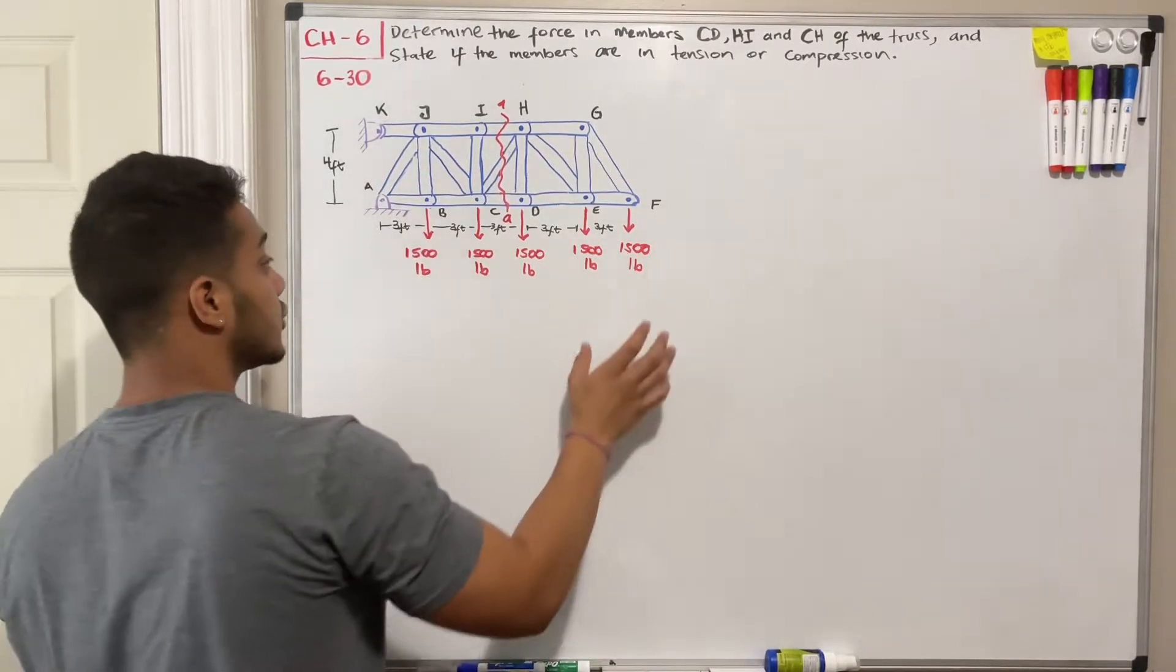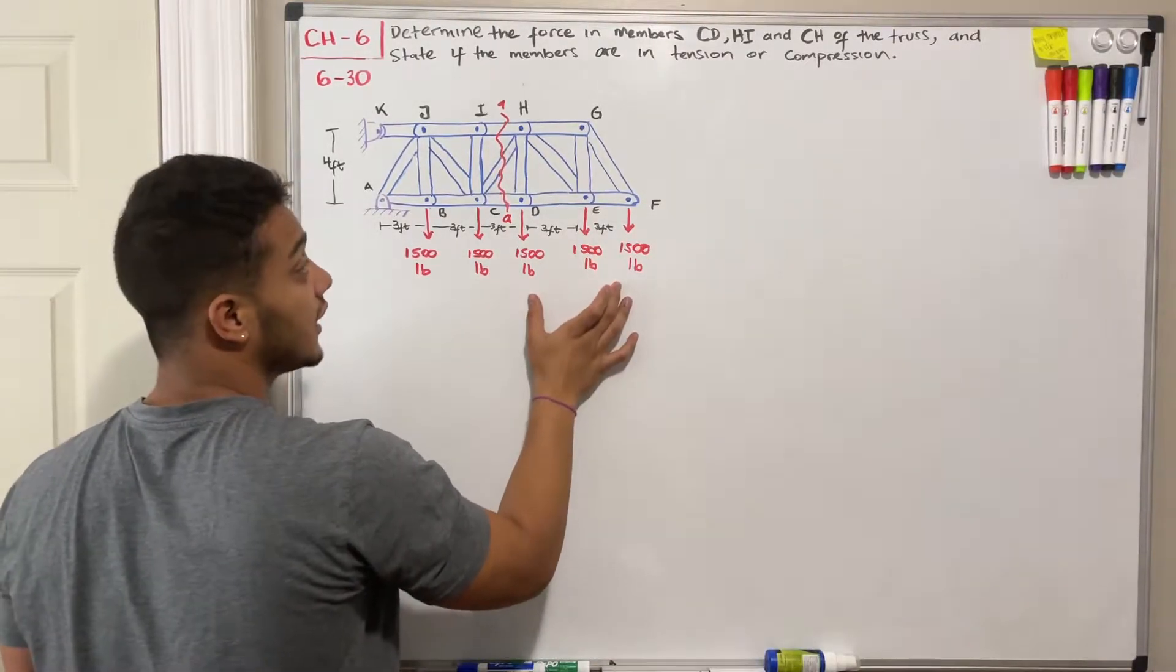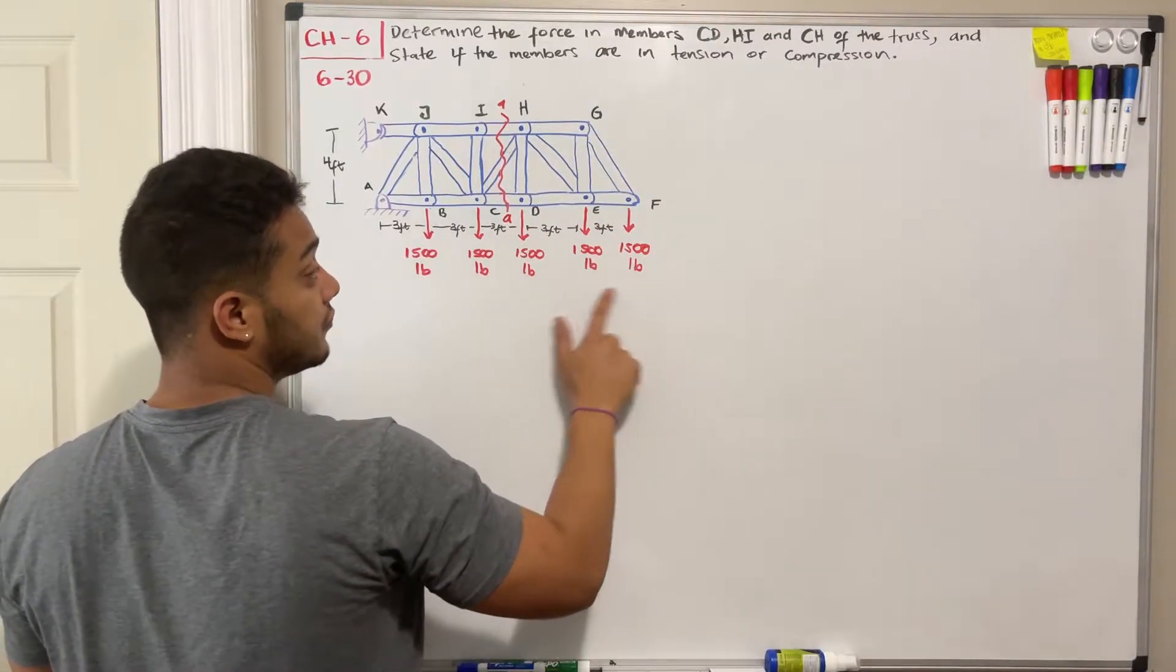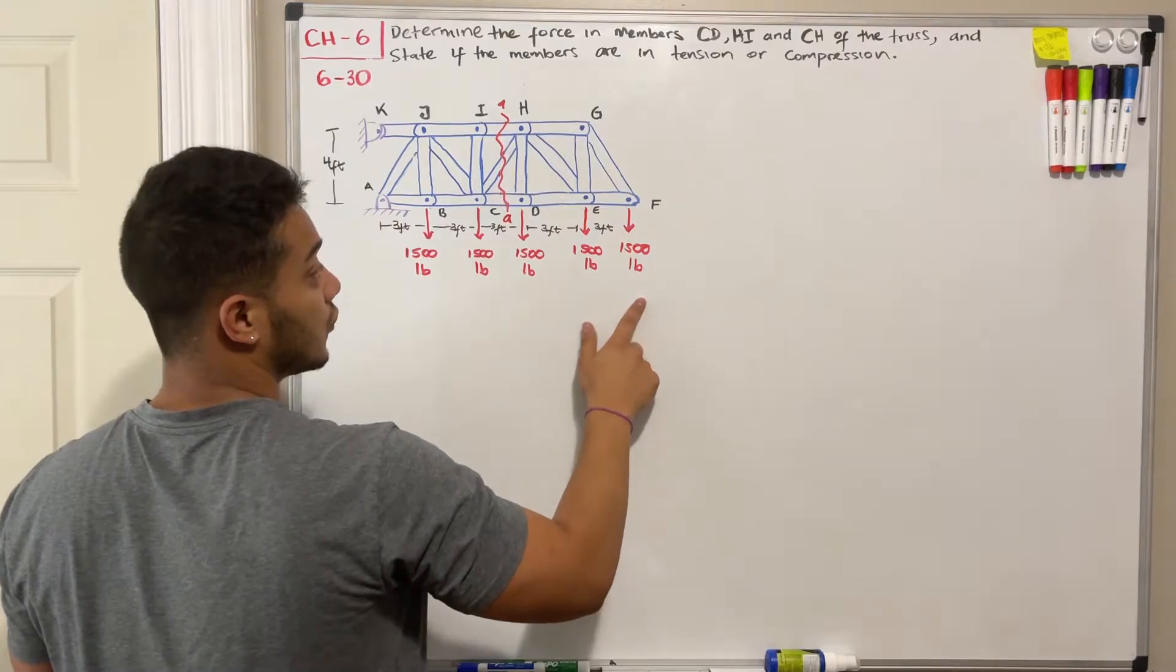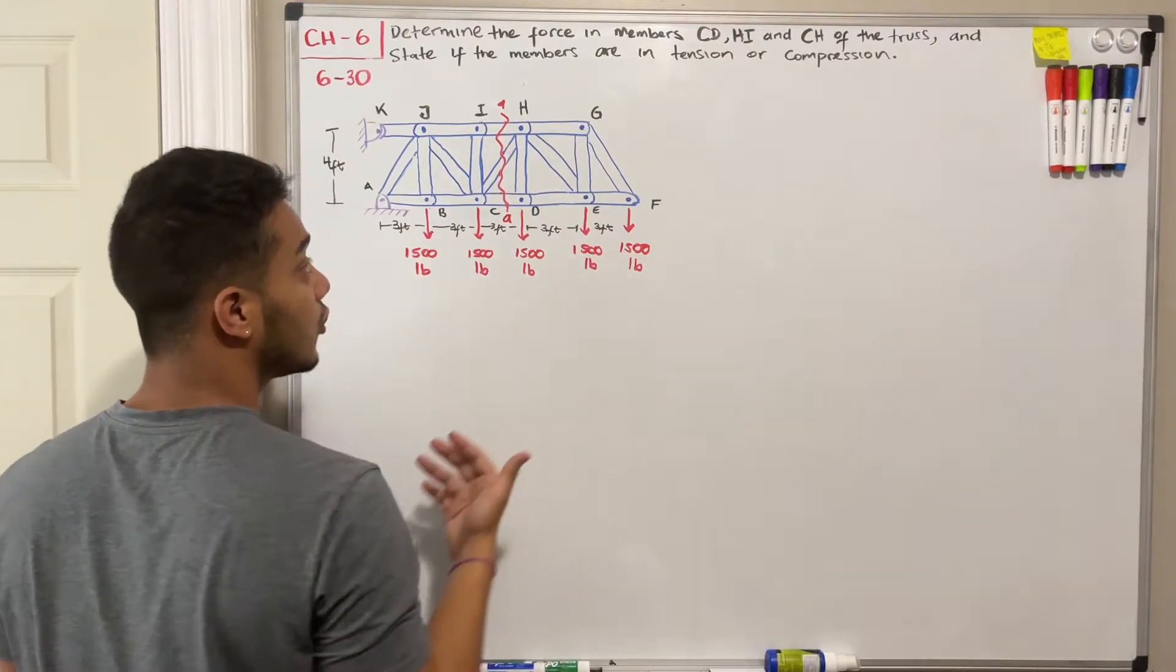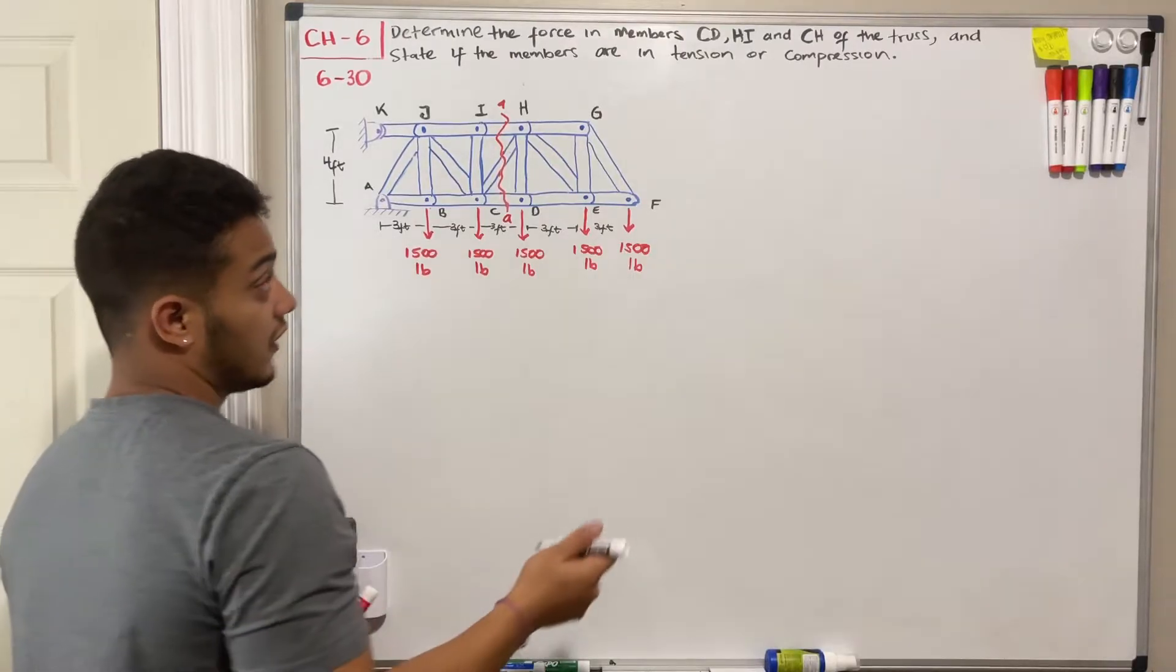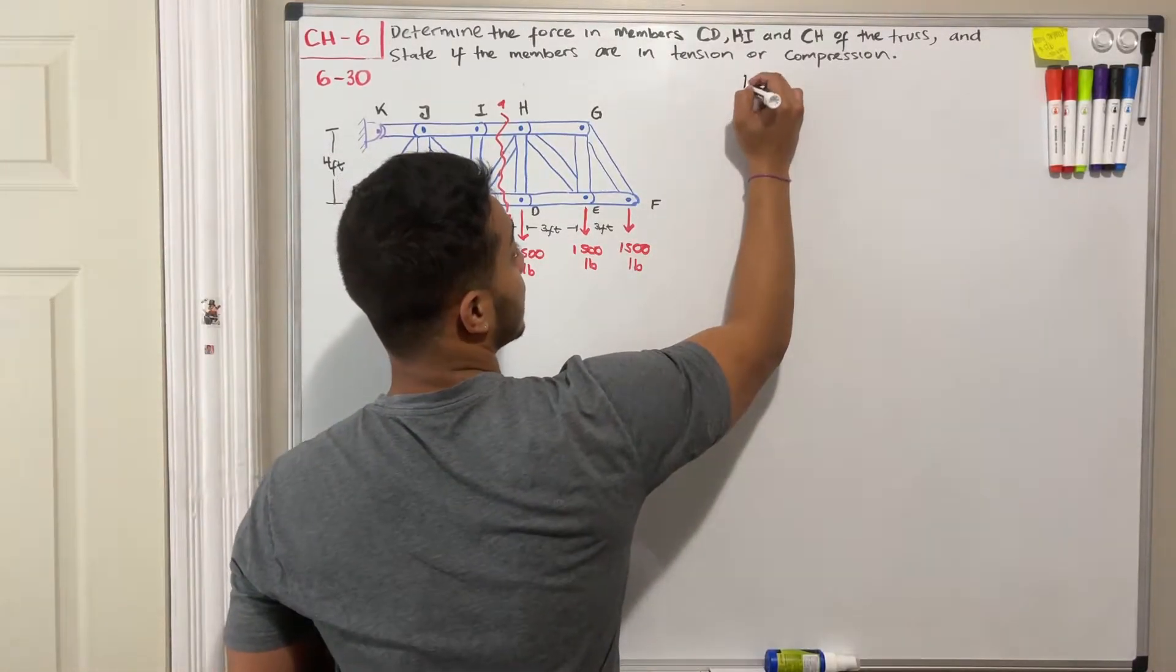Well, if we look on the other side, on my right side, we have only these 1500 pounds, which we know, and we don't have any more unknowns than just the members themselves. So after we pick our side, we draw a free body diagram.